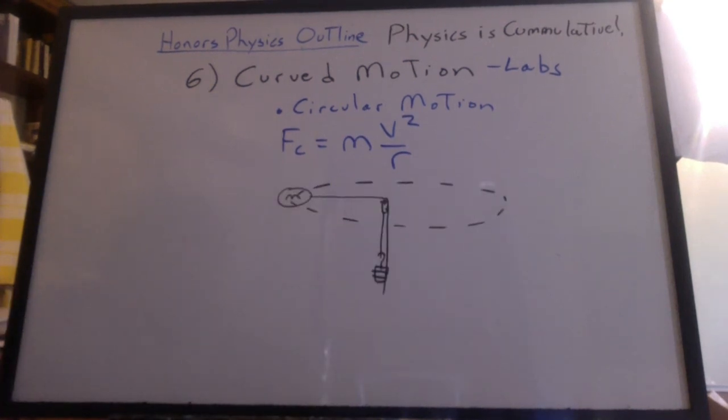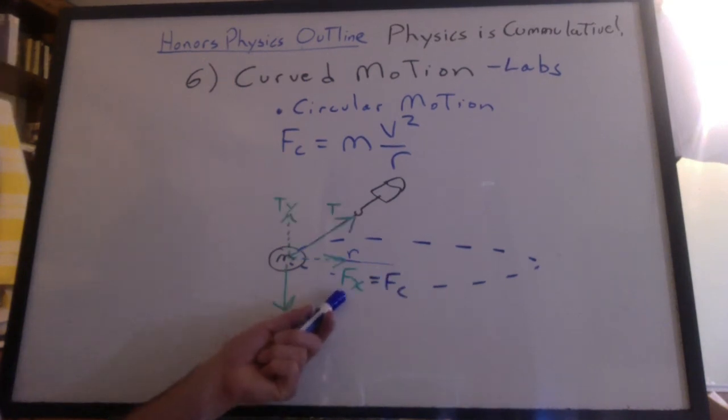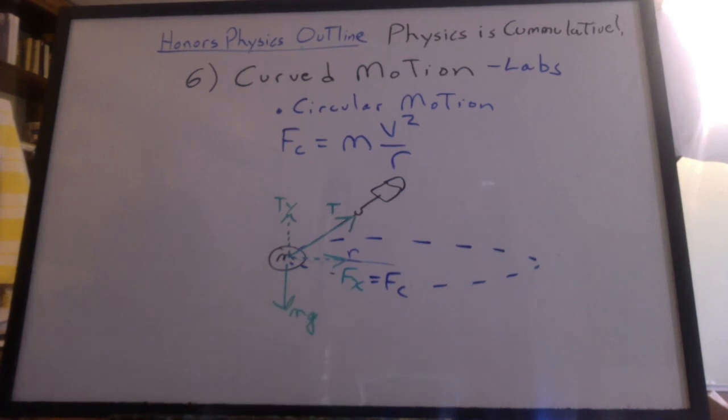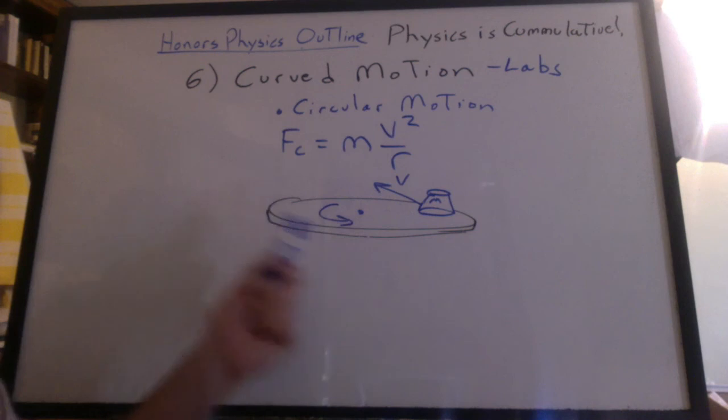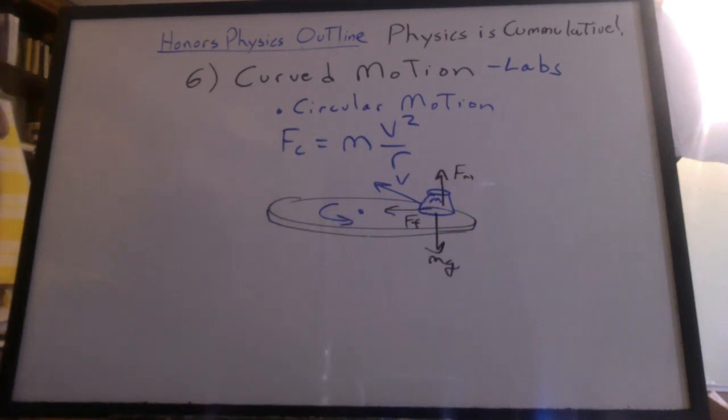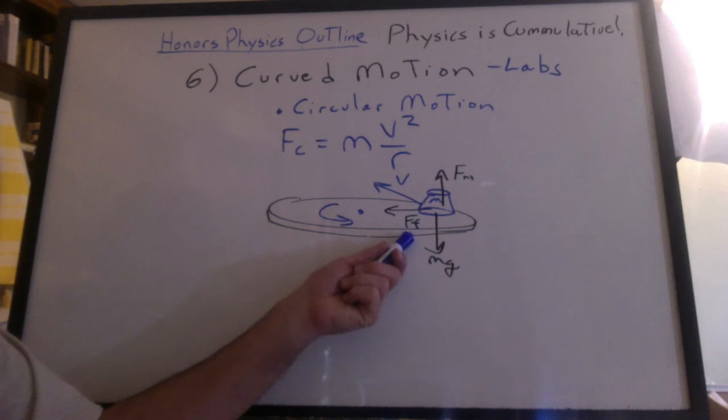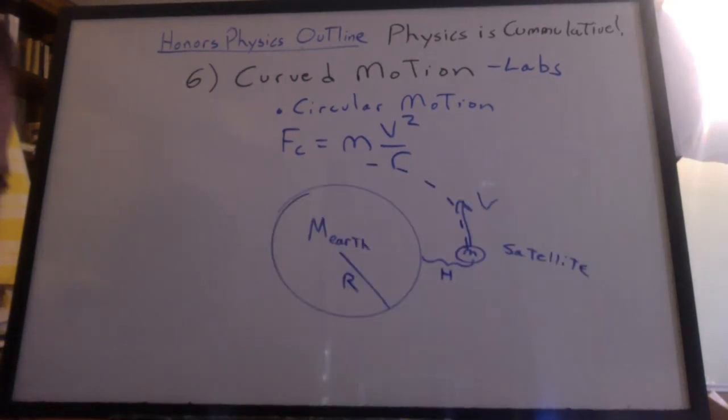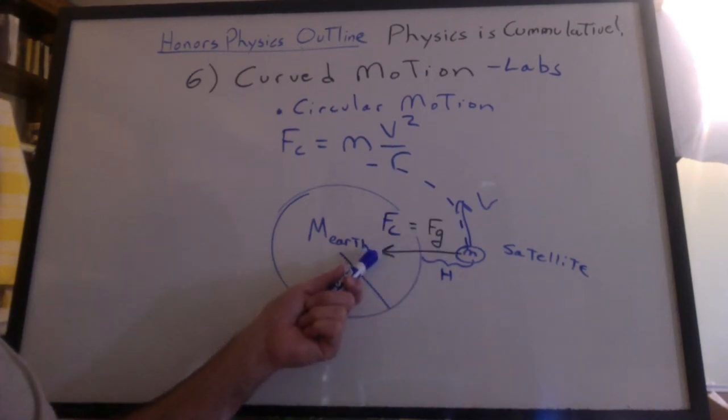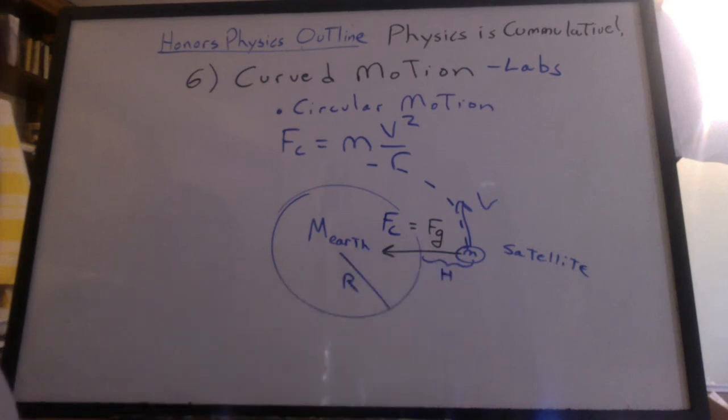We did the lab where we swung the ball around our head and found that the Fc was caused by the tension. We did the conical pendulum lab, and we found the x component of the tension in the string is what caused the Fc. We had a rubber stopper on a turntable rotating around. The only thing capable of pointing to the center was the force of friction. And that's what caused the Fc. We had a satellite orbiting the earth. It was the force of gravity that caused the Fc. And we actually saw a satellite on astronomy night.